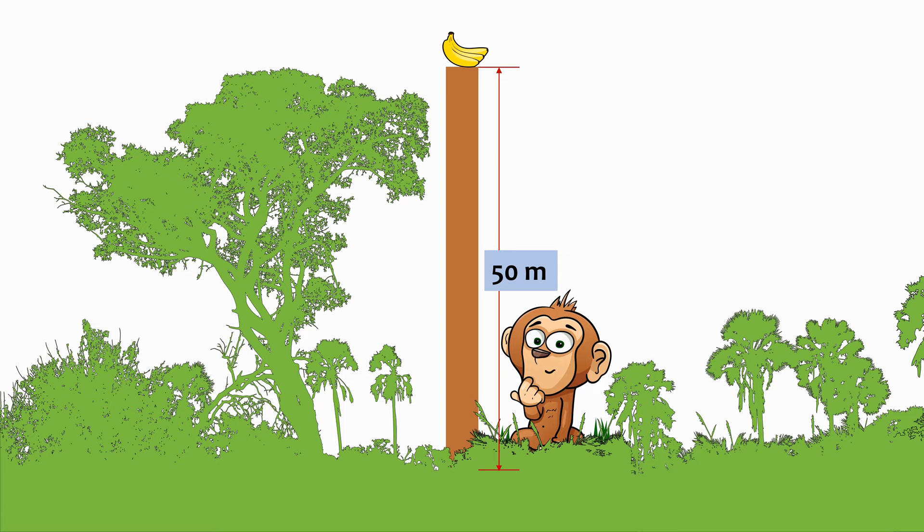Now where there will be bananas, there will be a monkey, isn't it? So there is a monkey at the bottom of the pole who wants those bananas and makes constant efforts to get it. What he does is he climbs three meters every hour, but because the pole is slippery, slips down by two meters.